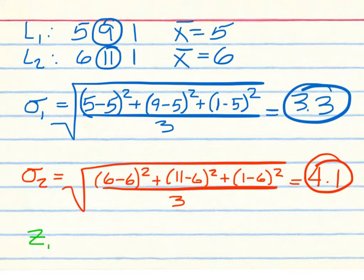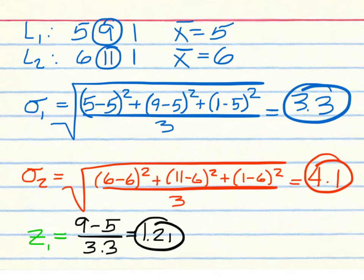Next we find the z-score for List 1. The z-score for item 9 in List 1 is the item 9 minus the mean 5, divided by the standard deviation of 3.33. That gives us 4 divided by 3.33, which comes out to be 1.21.